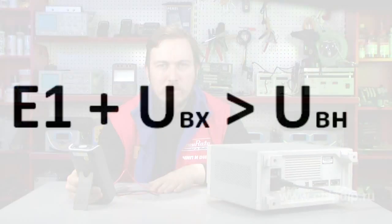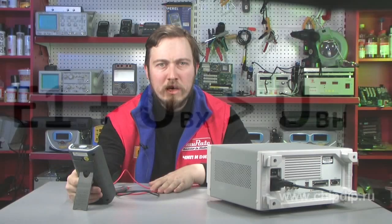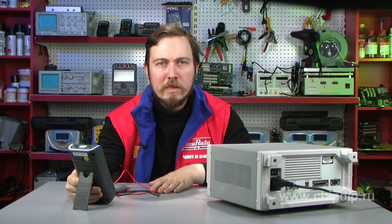If the direct external voltage equal to E1 plus Uin is more than Ux, then the net voltage on the junction becomes direct. The junction opens, and there a hole ejection from the emitter to the base starts.